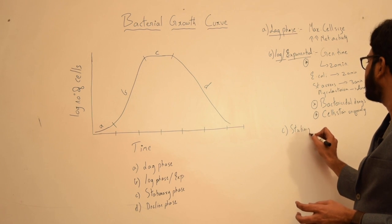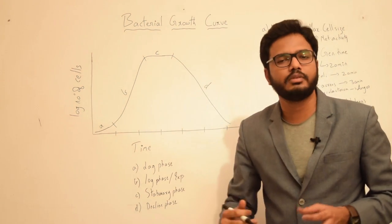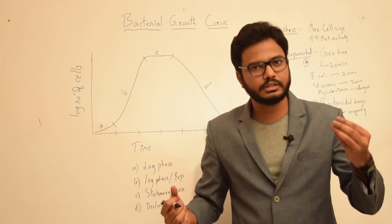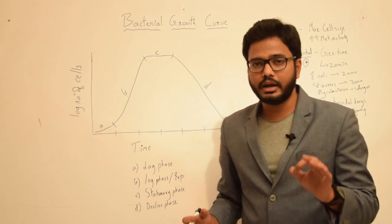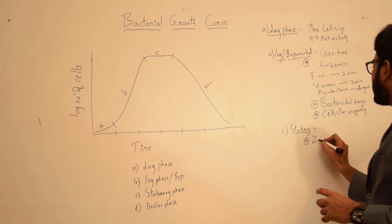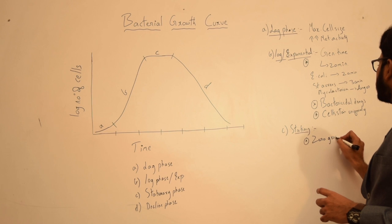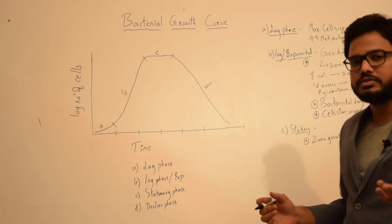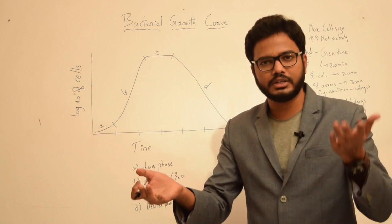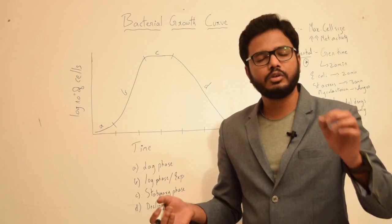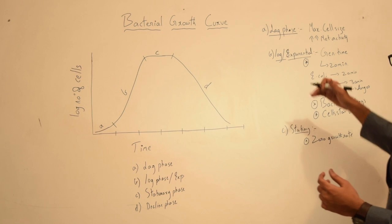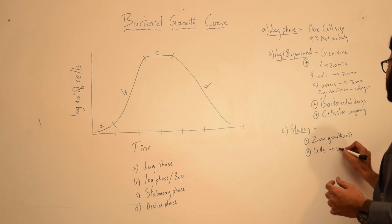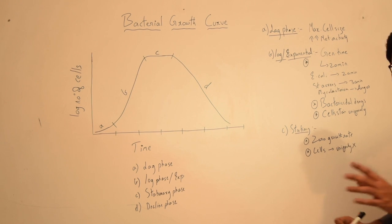In stationary phase, you can observe a flatter plateau. This is because of the balance between the number of cells being formed and the number of cells that are dying, due to depletion of nutrients in the culture media. The most important point is there is zero growth rate in stationary phase — there is cell formation but it is balanced by cell death. Cells cannot be stained uniformly in this phase.